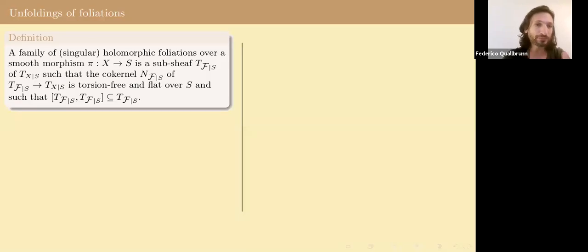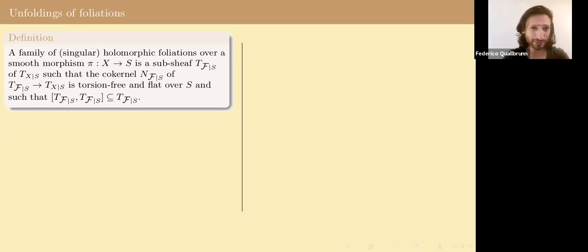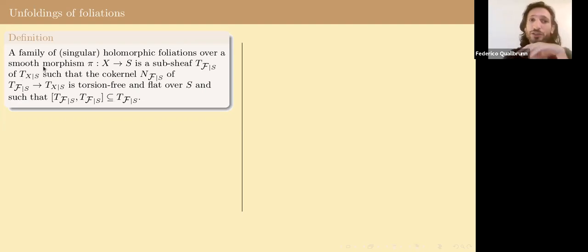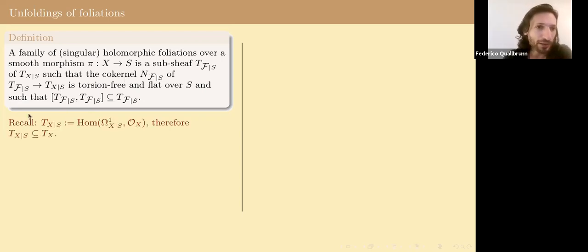To me, a family of holomorphic foliations — possibly singular holomorphic foliations — over a smooth morphism is a family of smooth varieties and a family of holomorphic foliations built on top of this family of varieties. It's a sub-sheaf T_F of the relative tangent sheaf such that the cokernel of this inclusion is flat over the base and such that this sub-sheaf is involutive — closed under Lie bracket and under commutators of derivations.